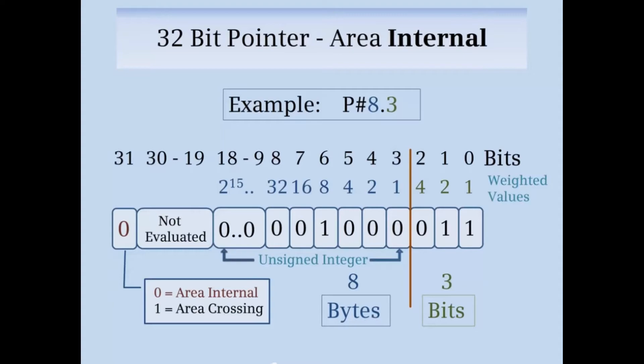For example, consider the area internal address P#8.3. The bits would be stored in the fashion shown. Bits 0 to 2 would contain 1, 1, 0 making up the decimal value 3. There would be a 1 in bit 6 with weighted value 8 making up the byte part of the address. This bit pattern would be the area internal address P#8.3.